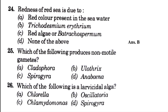Then, redness of the Red Sea is due to — blank: red color present in the sea water, Trichodesmium erythraeum, red algae, or Batrachospermum. The answer is option B, that is Trichodesmium erythraeum. Which of the following produces non-motile gametes? Options are Cladophora, Ulothrix, Spirogyra, and Anabaena. The answer is option C, that is Spirogyra.